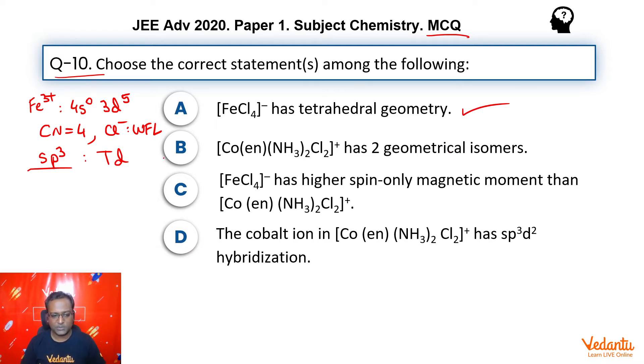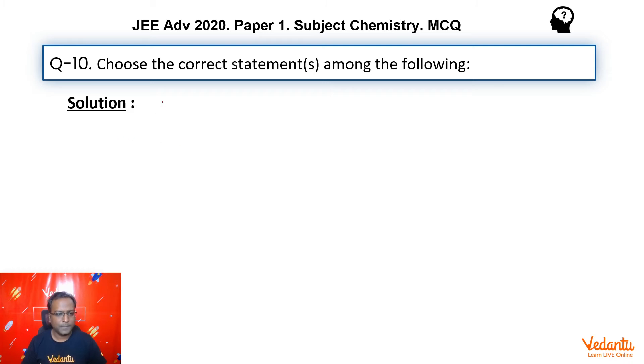Now let's move ahead to the next one, option number B. In option B, he says that M, ethylene diamine is a bidentate ligand. Ammonia is a monodentate ligand. Chlorine is a monodentate ligand. He says that this compound has two geometrical isomers. So, let me take it on the next page to draw. So, we are talking about here MA2B2C2 having two geometrical isomers. So, let's try and draw.